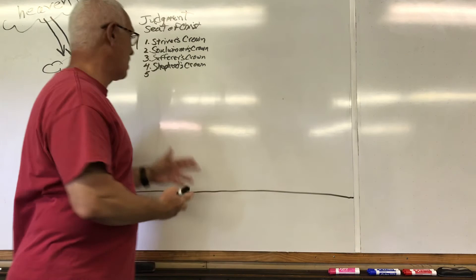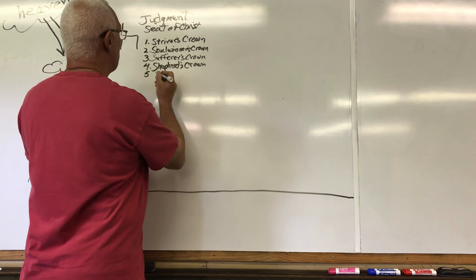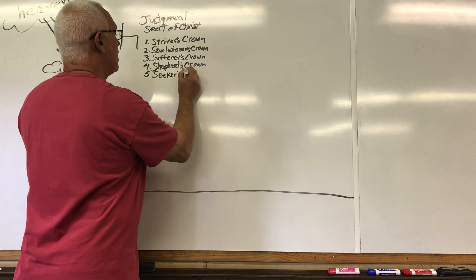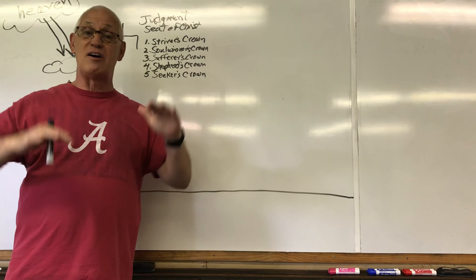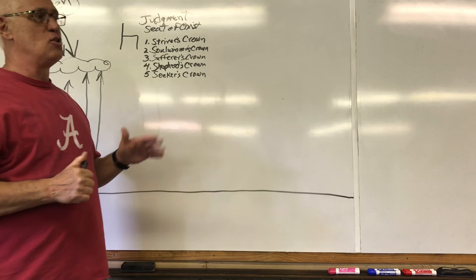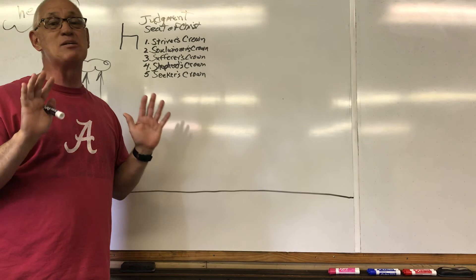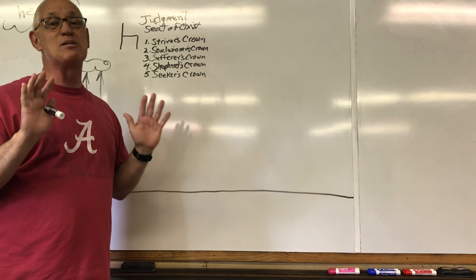The last one is the seeker's crown, and I wish this one for all of you. Paul the apostle said, henceforth there is laid up for me a crown of righteousness, crown of living right, which the Lord will give unto me on that day, and not to me only, but to all them that love his appearing. They're yearning and looking forward to the coming of Christ, and they're living in such a way serving God.